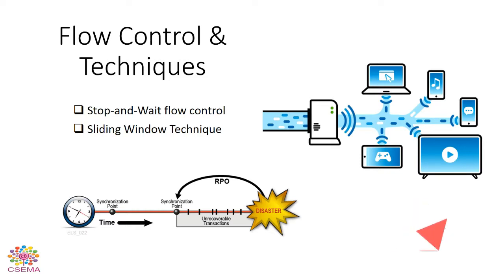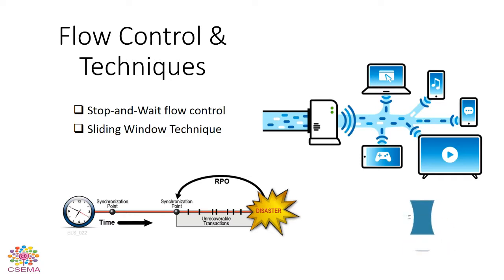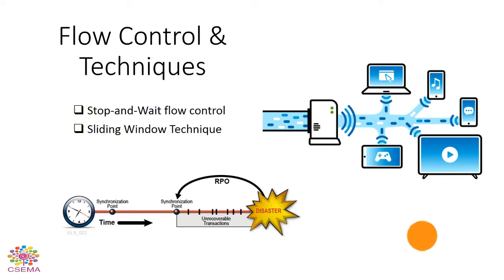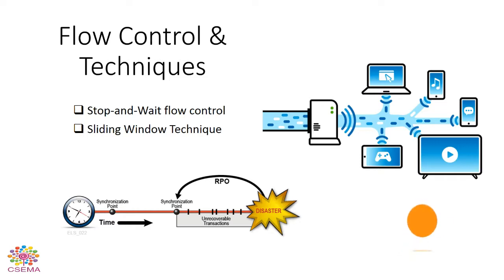The OSI model's data link layer uses techniques to control all the data flow from one system to another, and all the different systems are controlled by the OSI model's layers and its operations. Here we're going to describe flow control and what kinds of techniques are used by the data link layer to control the data flow between different kinds of systems or in a medium.